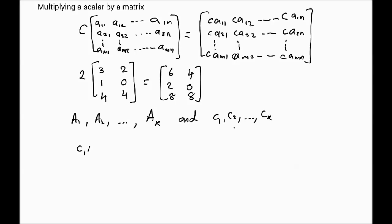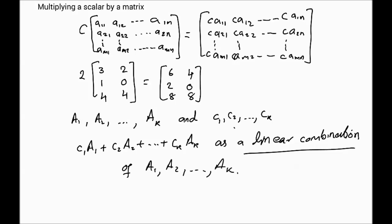Then we define C1 A1, plus C2 A2, plus CK AK, as a linear combination. So this is called a linear combination of A1, A2, AK. And the coefficients of this linear combination are C1, C2, up to CK. So this is called a linear combination.